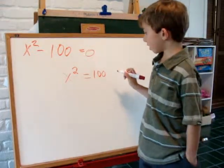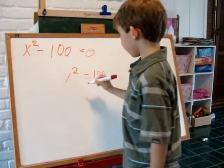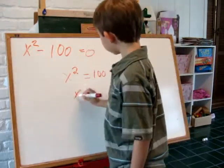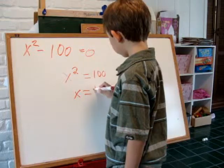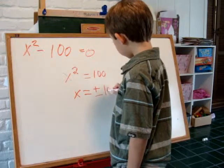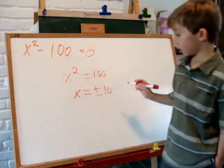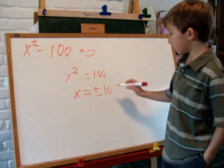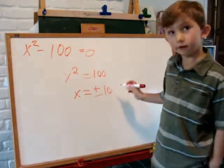Then, we take the square root of both sides and get x equals plus or minus 10. There are two answers, 10 and negative 10.